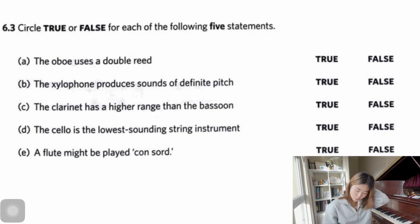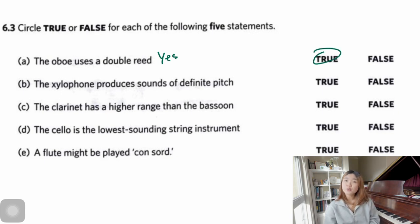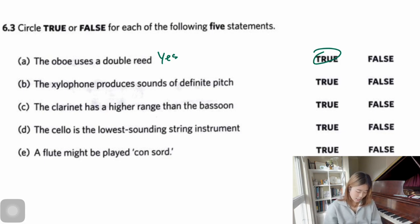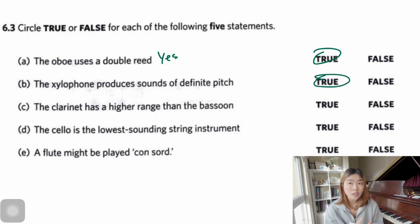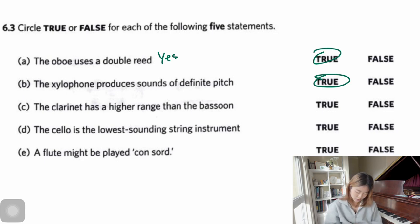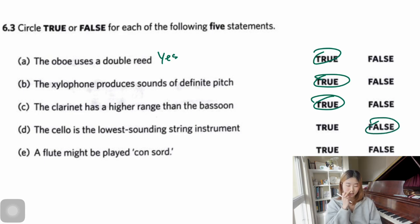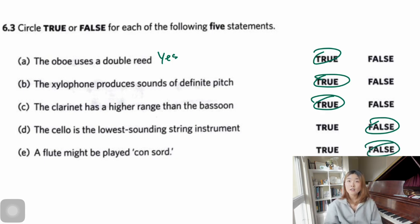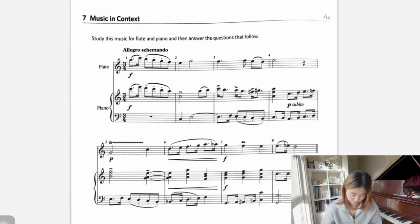Instrument knowledge: the oboe uses a double reed — true. The clarinet uses a single reed. Oboe, clarinet, and bassoon — oboe and bassoon use double reeds. The xylophone produces sound of definite pitch — true, meaning you can create different notes, not just sound effects. The clarinet has a higher range than the bassoon — true. The cello is the lowest string instrument — false, the double bass is lower. The flute can be played with a mute — false, there is no mute for the flute.